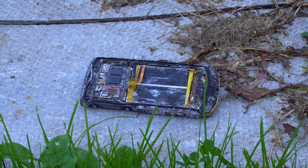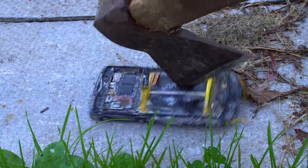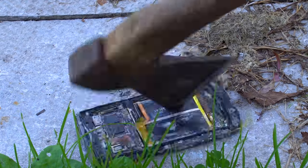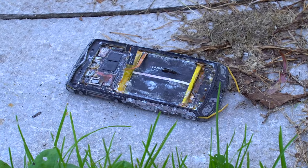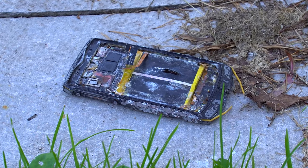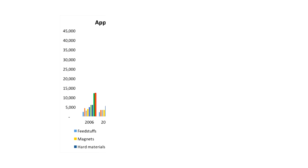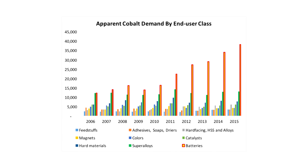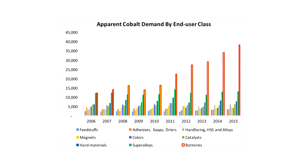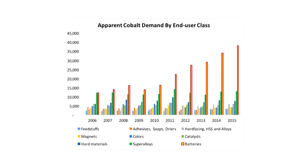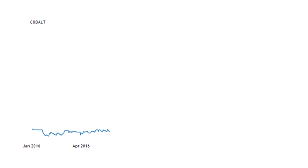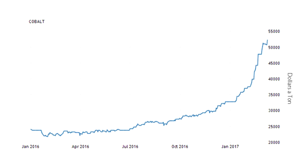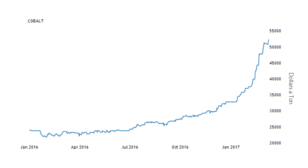The battery of your mobile phone is likely to contain more than 10 grams of this chemical. Nowadays, because of the growing demand for cobalt, the extent of its mining is growing too, as well as this metal's price, which has grown four times in the last two years.